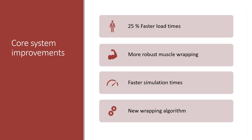Let's talk about the new features in the modeling system. Some of the core features I want to highlight today include load times of models improved by 25%. We also have a new wrapping algorithm which makes muscle wrapping much more robust and allows for faster simulation times. That new wrapping algorithm is what I'm going to highlight now.